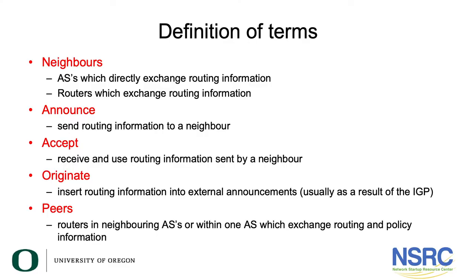Here are a few more definitions. Neighbors means ASs or routers that directly exchange routing information. Announcements means routing information sent to a neighbor. Accepting a route means receiving and using routing information sent by a neighbor. Originating a route implies inserting routing information into external announcements, usually as a result of IGP. Pairs refers to routers in neighboring ASs or within one AS which exchange routing and policy information.